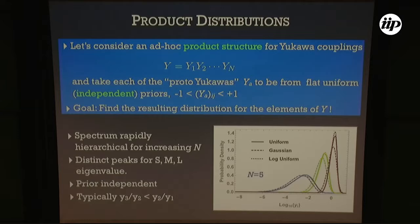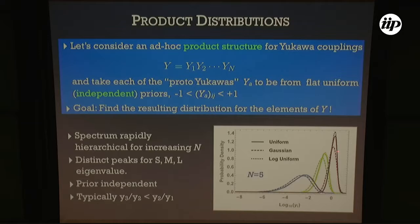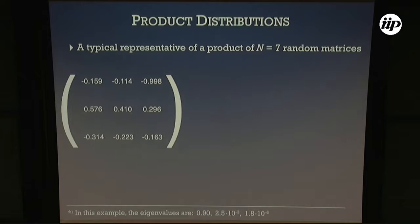For a 3×3 matrix you get three distinct peaks developing — one for the largest, medium, and smallest eigenvalue. You not only get a hierarchy between the largest and smallest, but also between the intermediate ones. This is quite prior-independent. Typically, the hierarchy between the two heavier eigenvalues is a little less than the hierarchy between the two lighter ones, more like the charged lepton or up-type sector.